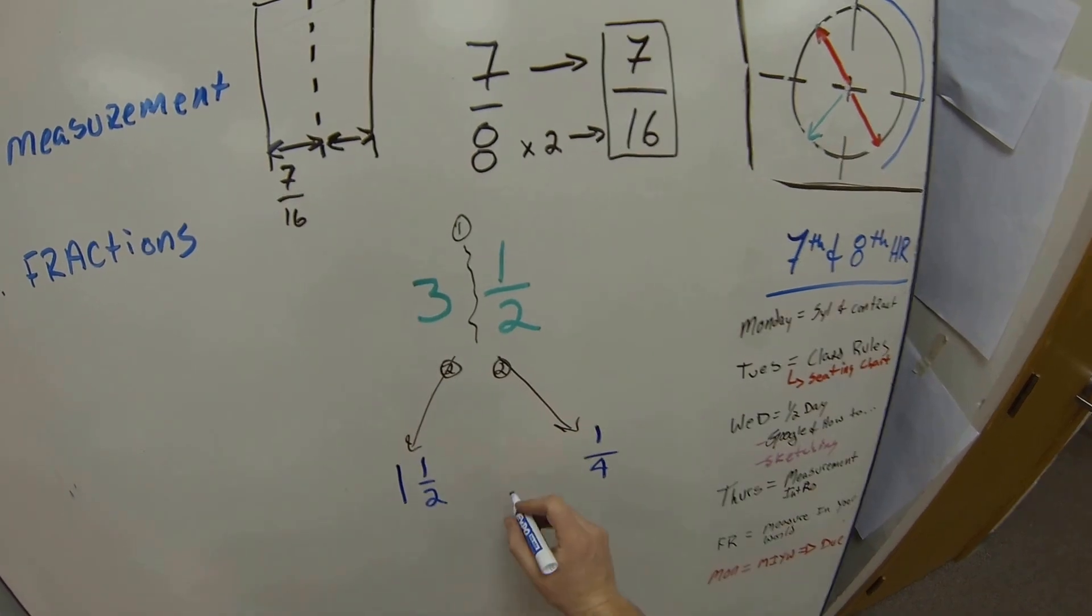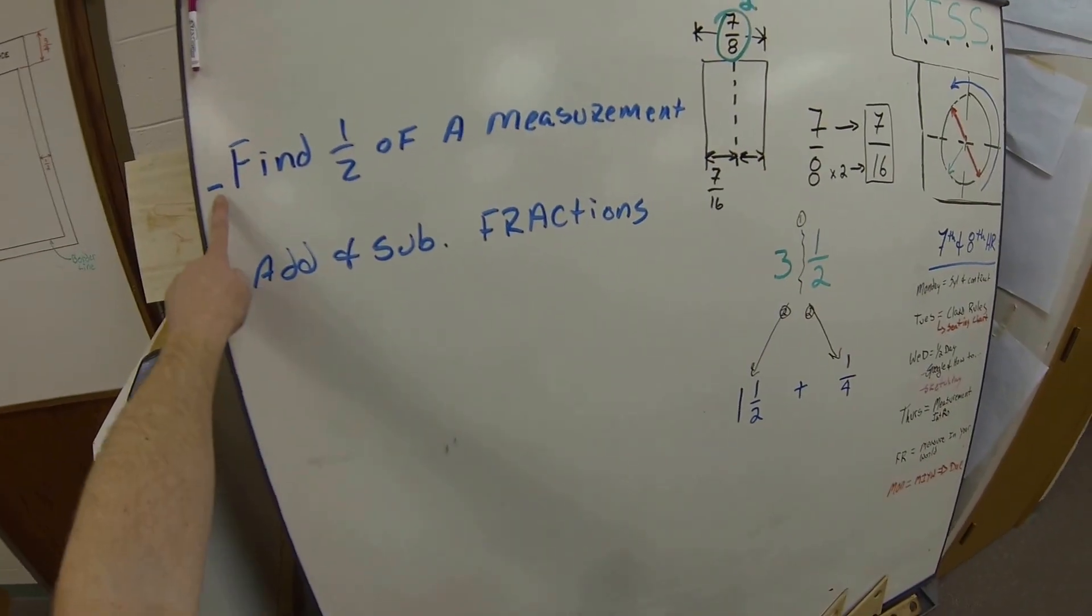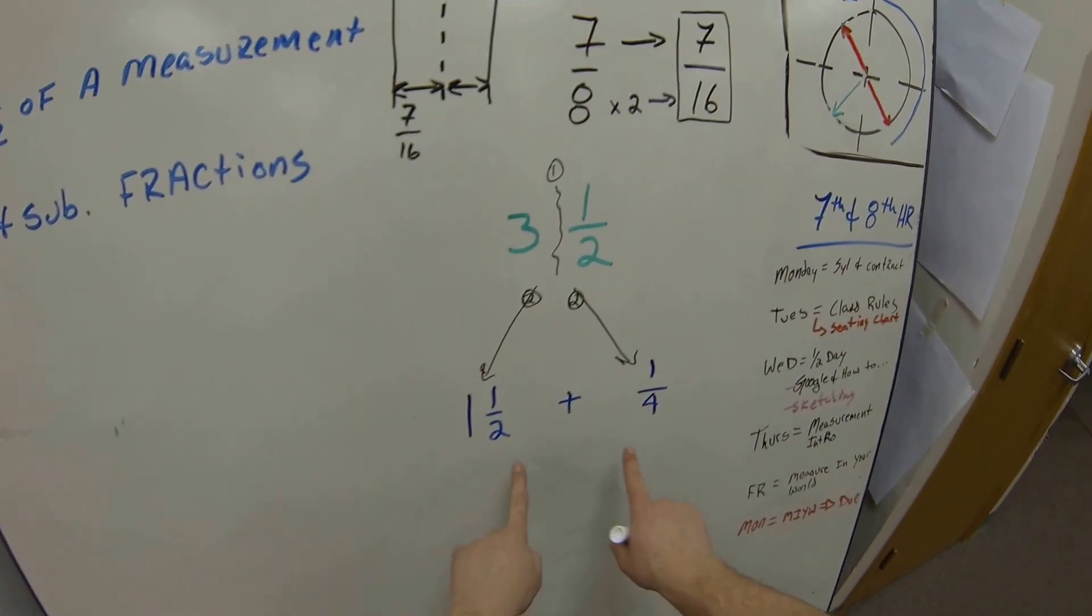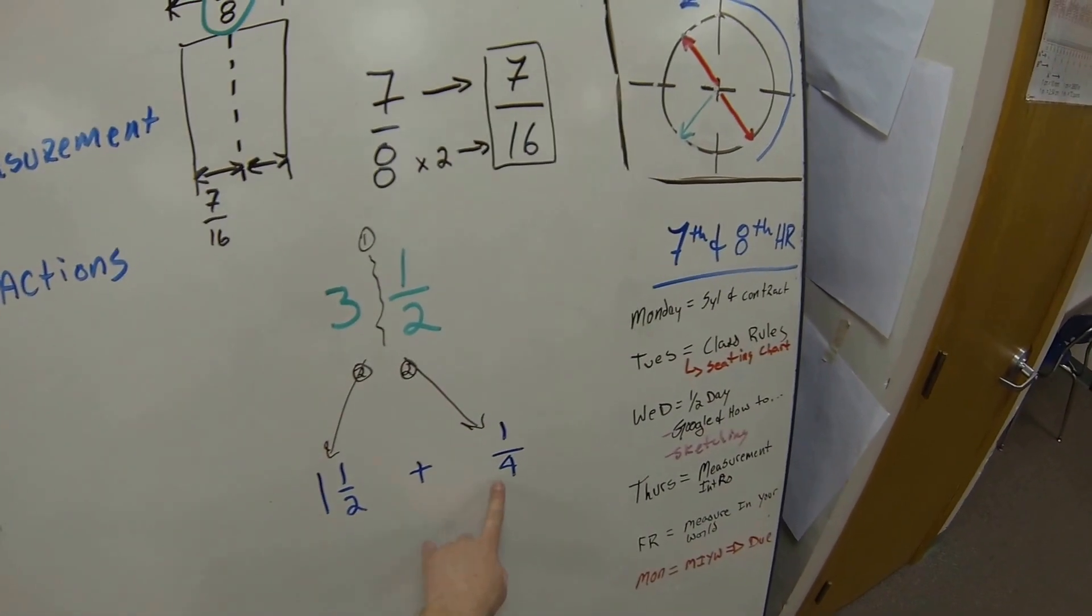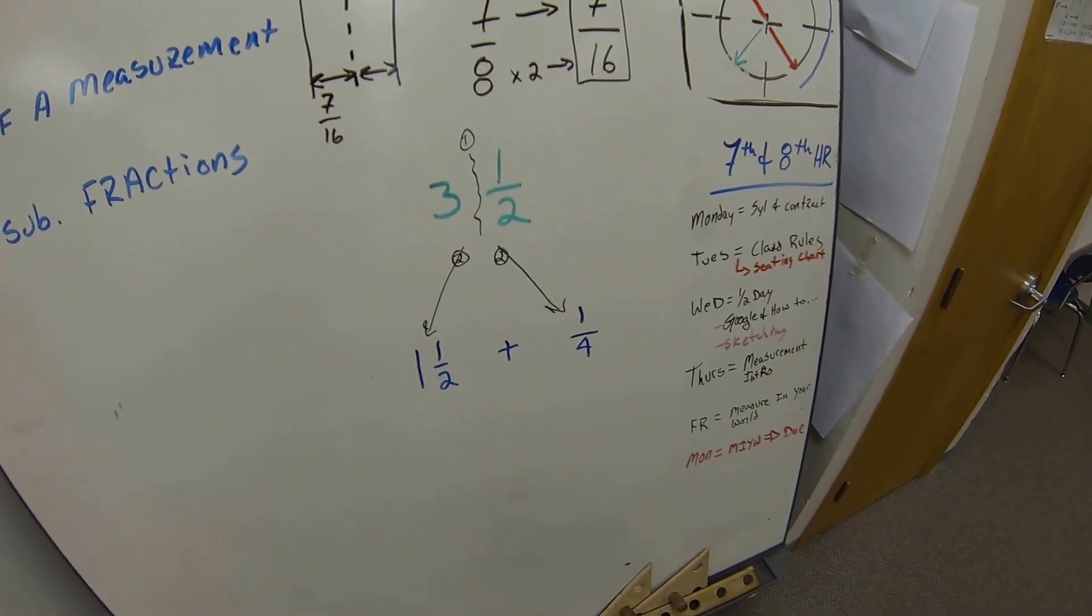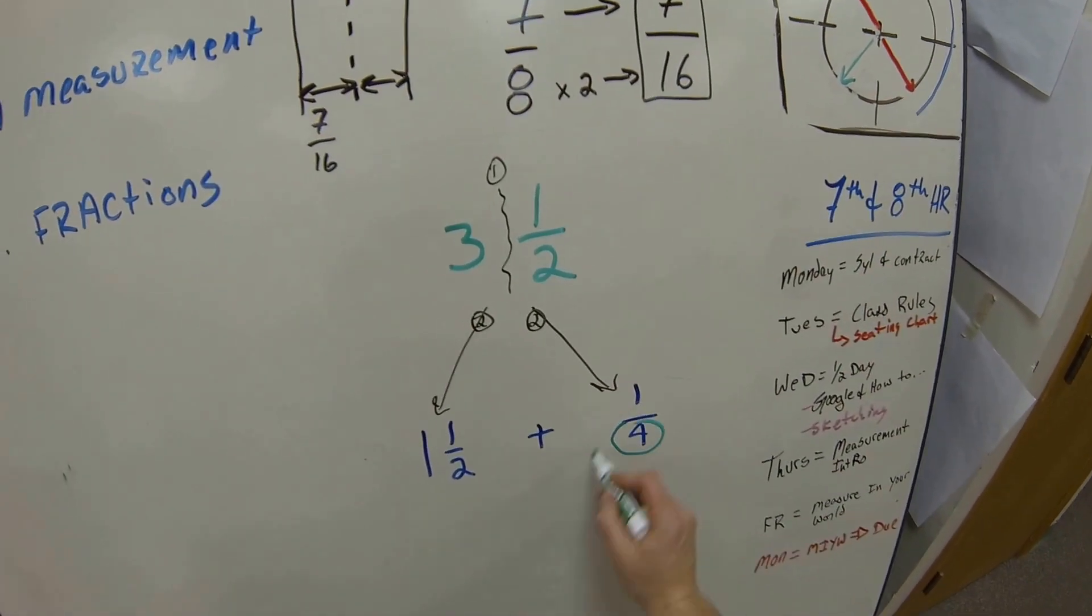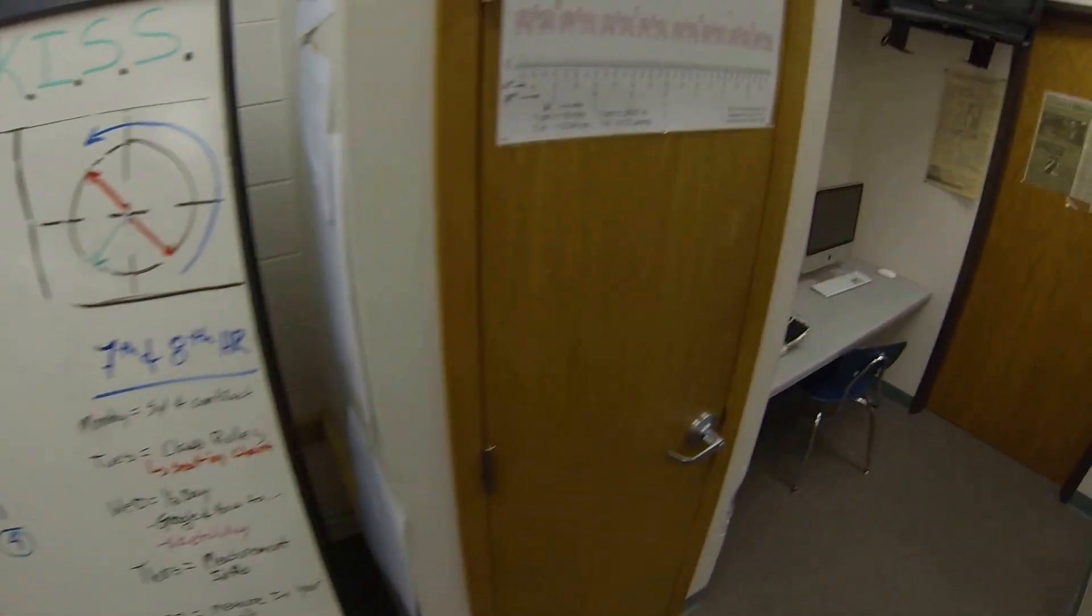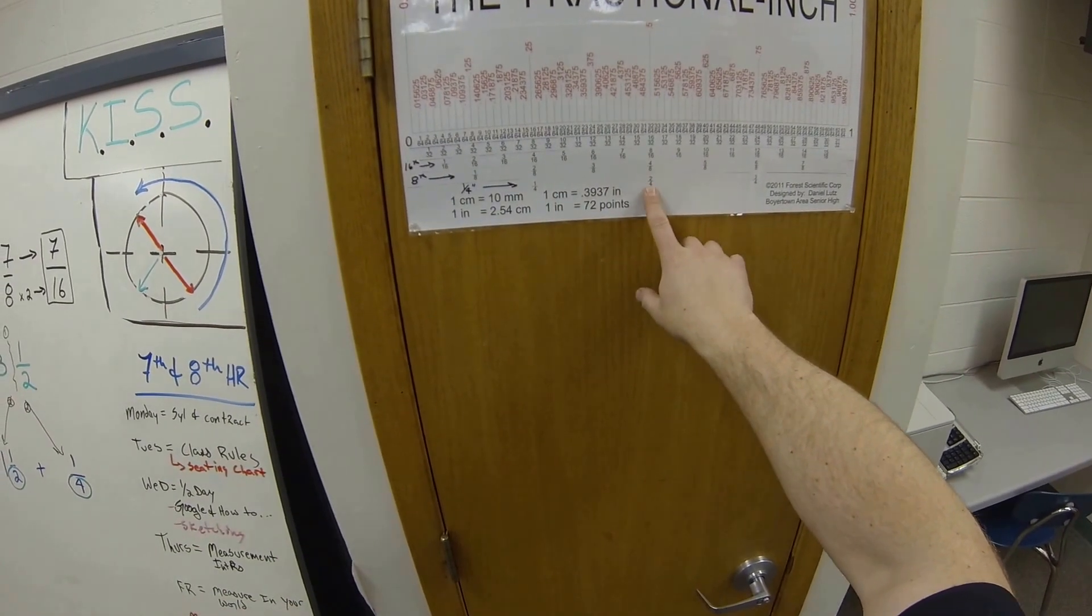So back over to what the objectives are, now we are going to do some adding of fractions. We're going to take these fractions together here: 1½ plus ¼. Well, how do we add fractions together? First of all, we need the same common denominator. So if we look at our chart over here on the wall, we have quarters and halves.